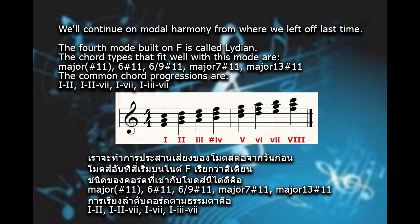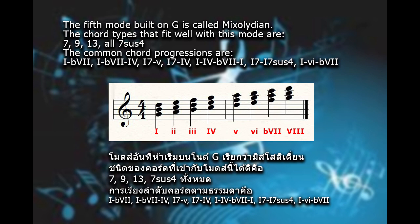First-seventh, first-third-seventh. The fifth mode built on G is called Mixolydian. The chord types that fit well with this mode are 7, 9, 13, and all seven suspended four. The common chord progressions are first-flat seventh, first-flat seventh-fourth-seventh on first, fifth-seventh on first, fourth-first-fourth-flat seventh, first-seventh on first.